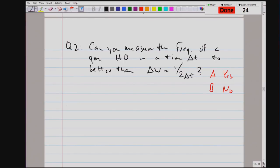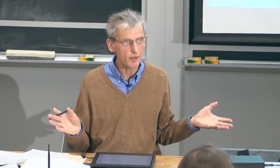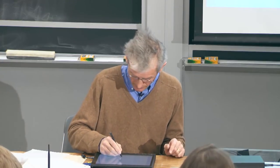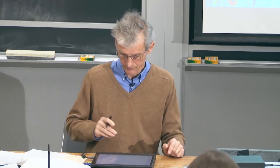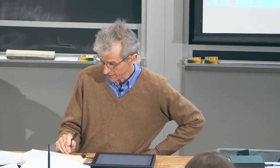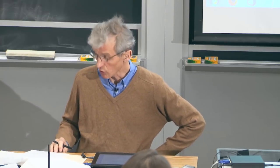Let's proceed to the next question, which is the same situation but instead of a quantum mechanical harmonic oscillator, we take an optical laser, and we observe a laser pulse lasting a duration delta t. Can we measure the frequency of the optical radiation better than this inequality tells us?